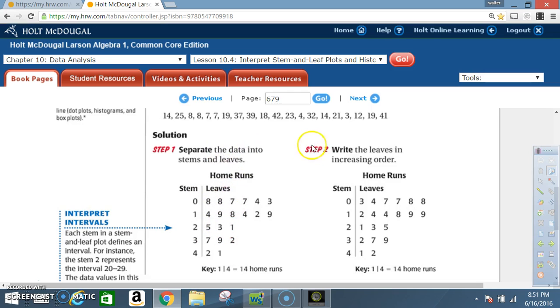Now here, step two, it says write the leaves in increasing order. So you're going to take your same numbers you have here and put them in order from least to greatest. So three, four, seven, seven, eight, eight. Take this set and you end up with twelve, fourteen, fourteen, fourteen, eighteen, nineteen, nineteen, twenty-one, twenty-three, twenty-five, thirty-two, thirty-seven, thirty-nine, forty-one, forty-two.